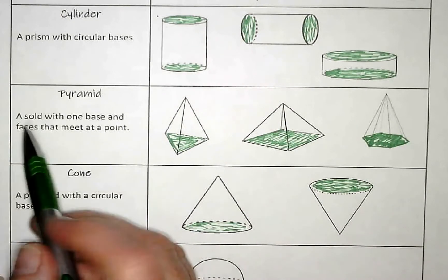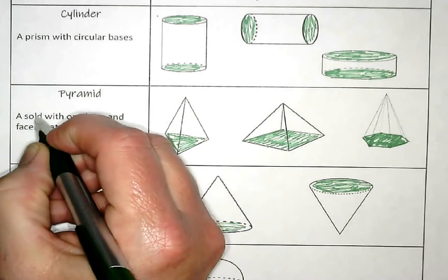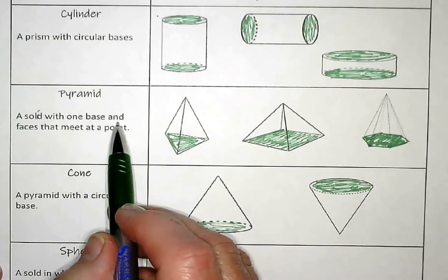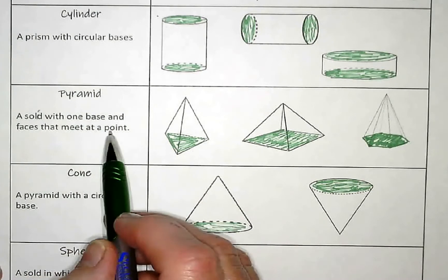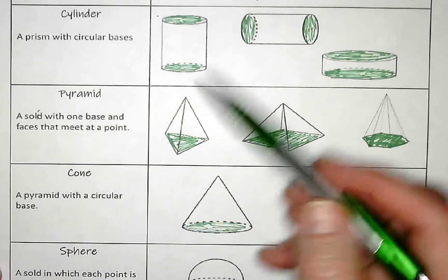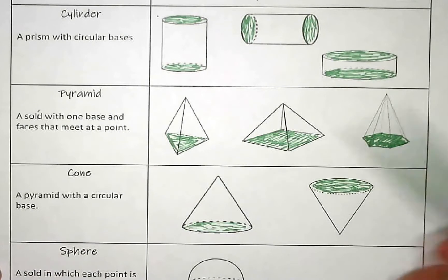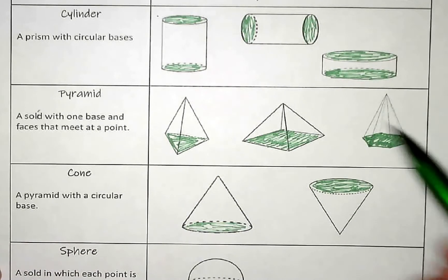But a pyramid basically is a solid with one base and faces that meet at a point. So when we talk about the base, you can see here, this one's a triangle. This base is a square. This base is a hexagon.